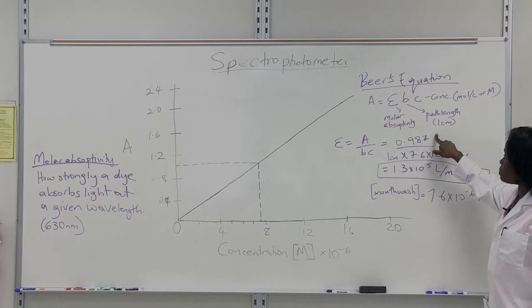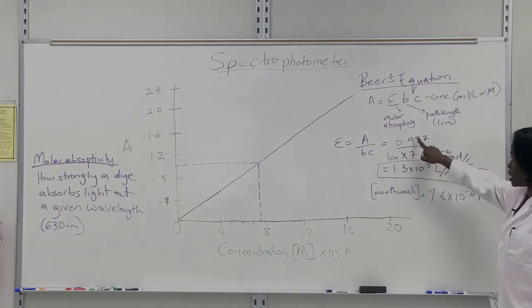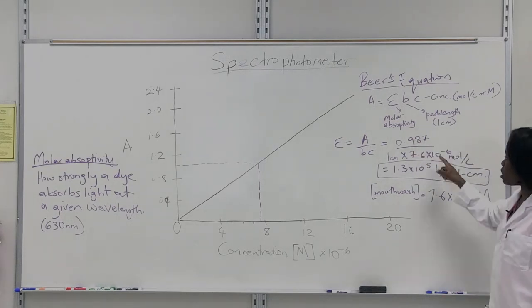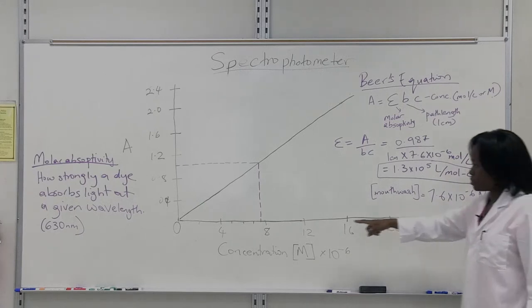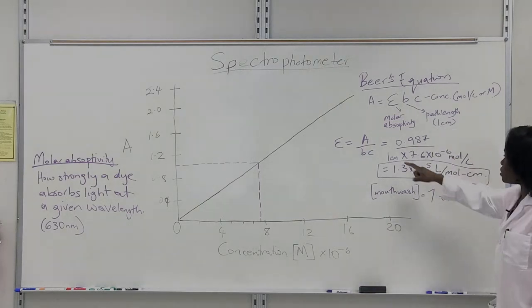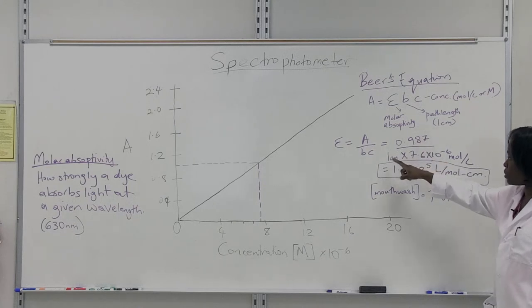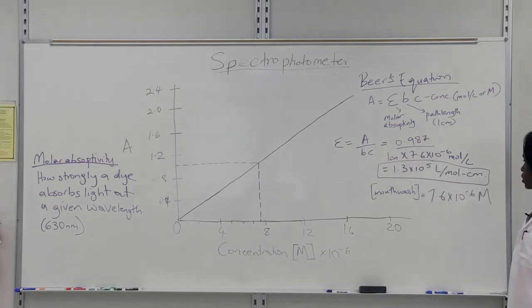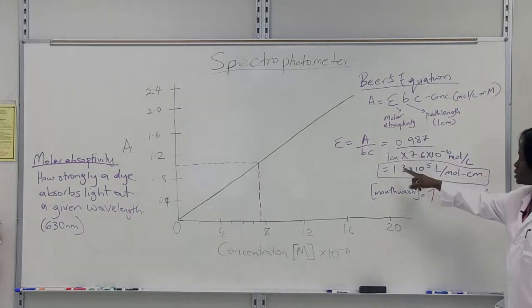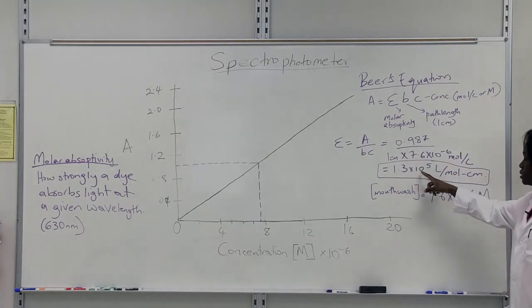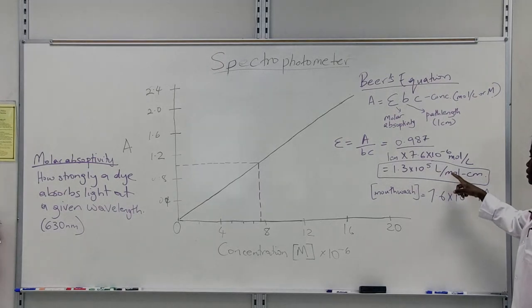So you know your absorbance value, which is 0.987. You know your concentration, which we determine from our curve. And then we divide our absorbance value by our path length times the concentration. And you should get a number looking like this, 1.3 times 10 to the fifth. And this is written in liters per mole centimeters.